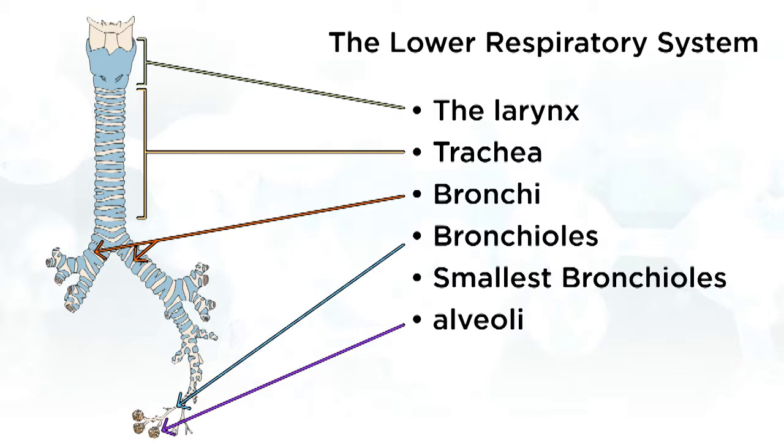As air descends down the trachea, it travels towards two large tubes that are called the primary bronchi. There is a right and left primary bronchus. What's interesting here is that the right bronchus has a greater diameter and is situated at a much steeper angle than the left bronchus. So when someone accidentally aspirates an object that enters the trachea, often that object will enter the right bronchus.